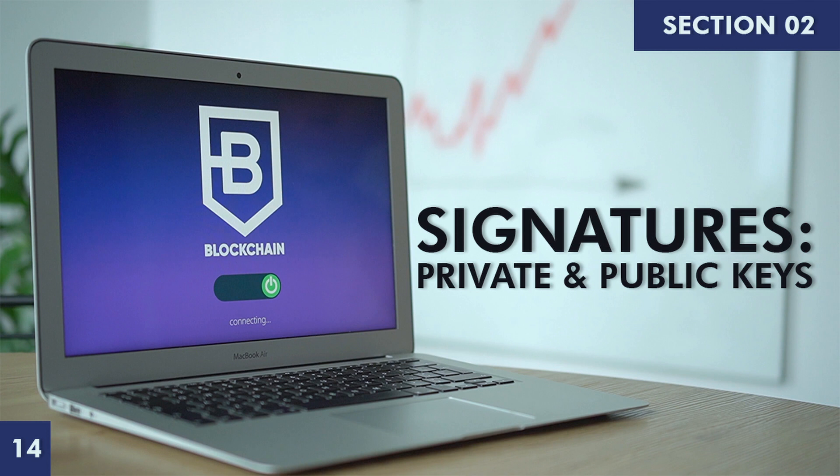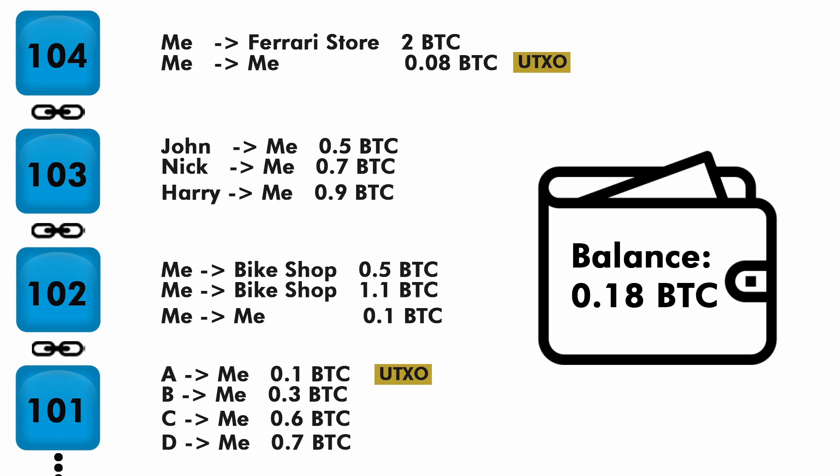This is where we left off in the previous video — we understood how balance is calculated by the wallet. But here a question arises: if you look at transactions, they are clearly visible. You can easily see who is performing the transaction, how much, and to whom. So here arises the question of privacy.